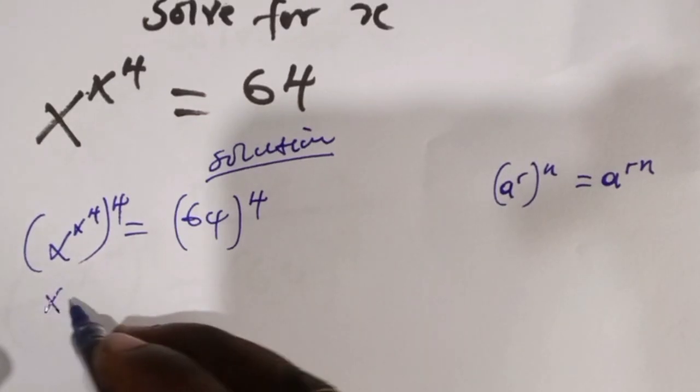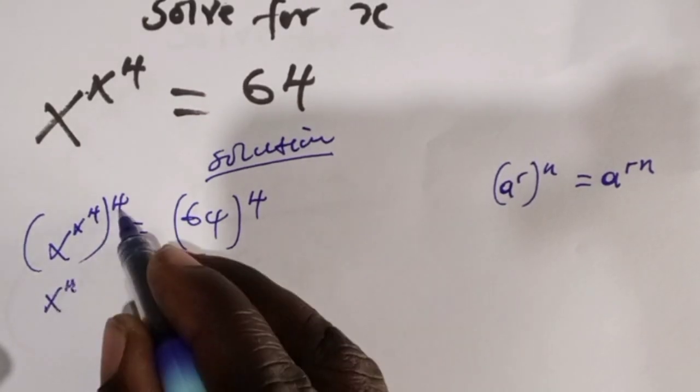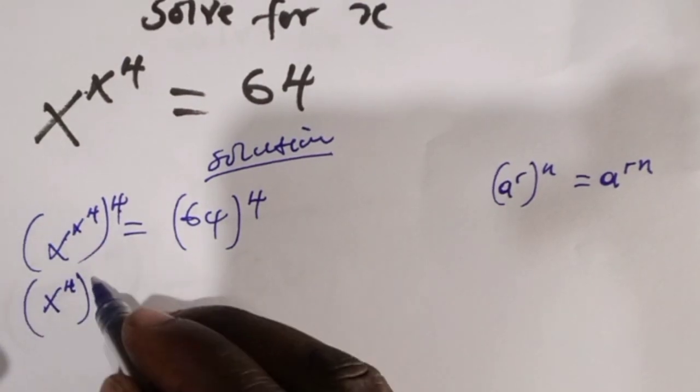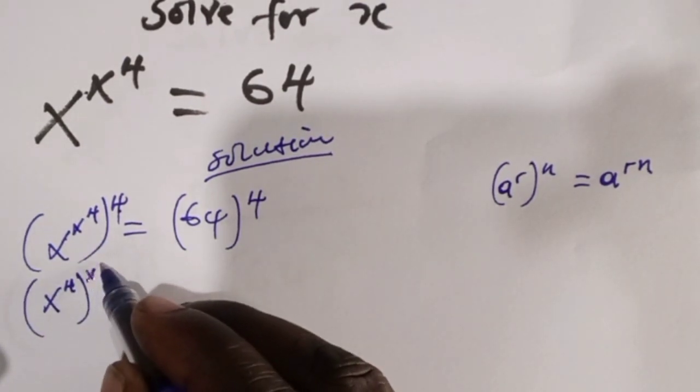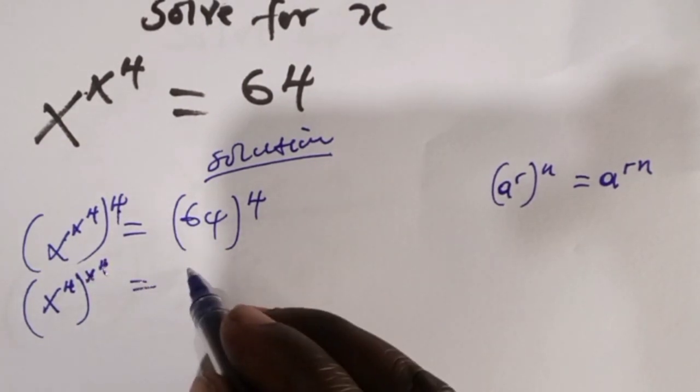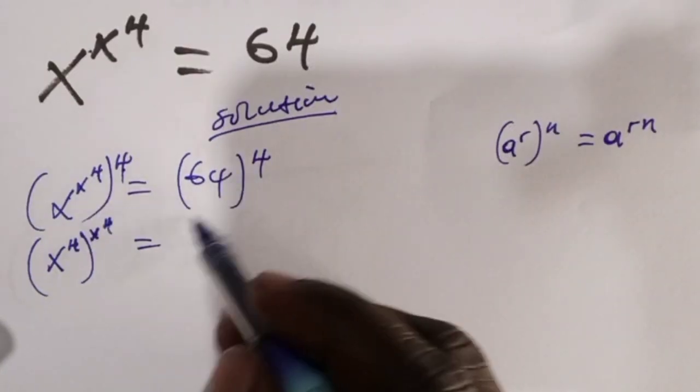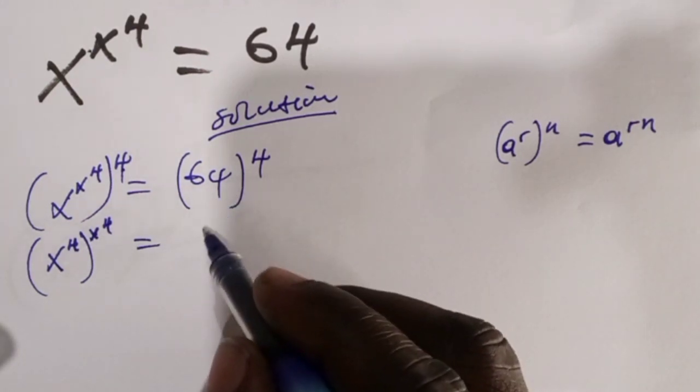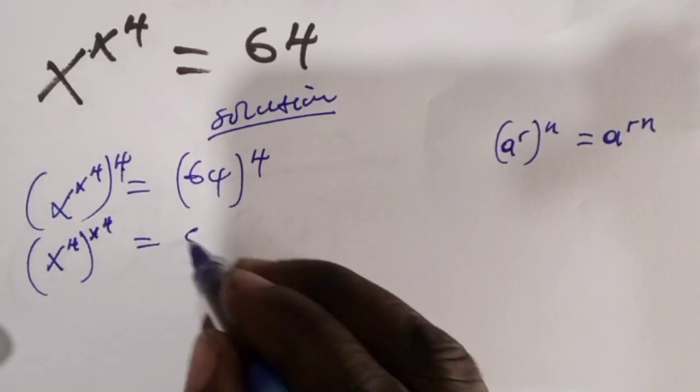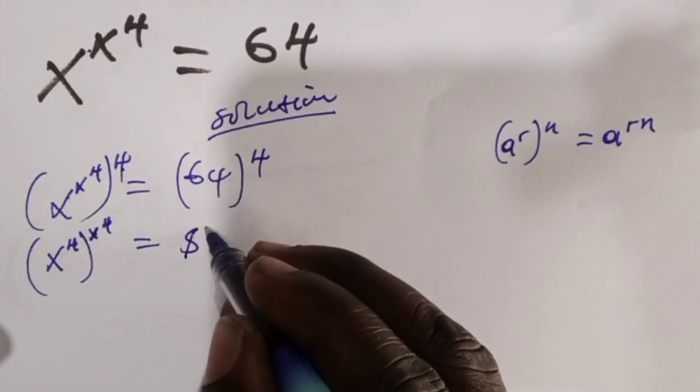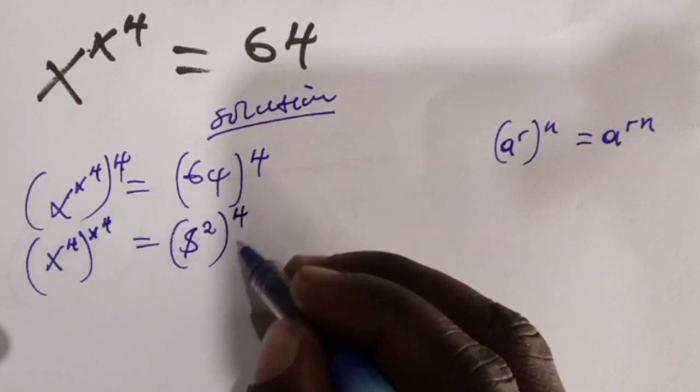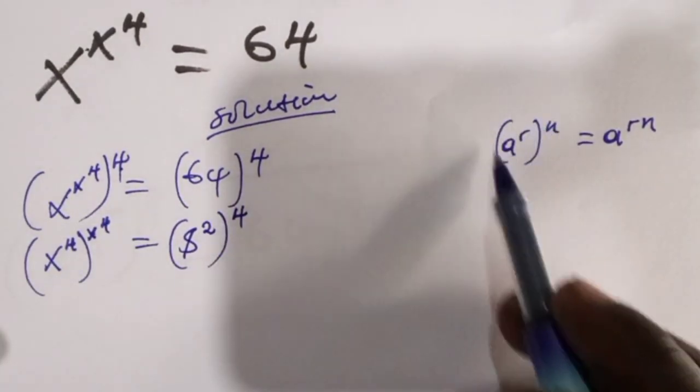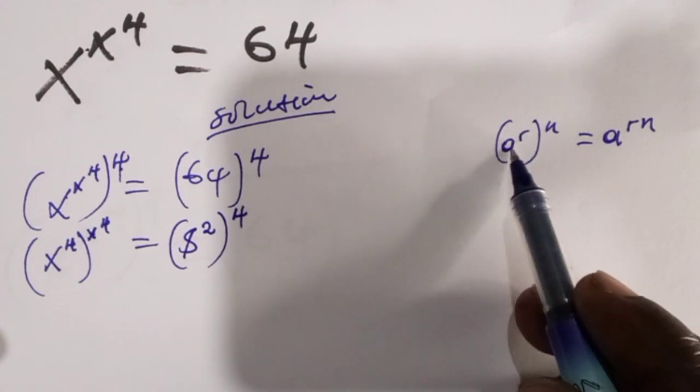It will be x power 4, this 4 here will come to be the power of this first x here, to the power x power 4, which equals, and this one we have to split it into, let's say 8 to the power 2 is 64, so it will be 8 to the power 2 power 4. Then this one applies the same here, in which a to the power r multiplied by n you are going to have a to the r times n.